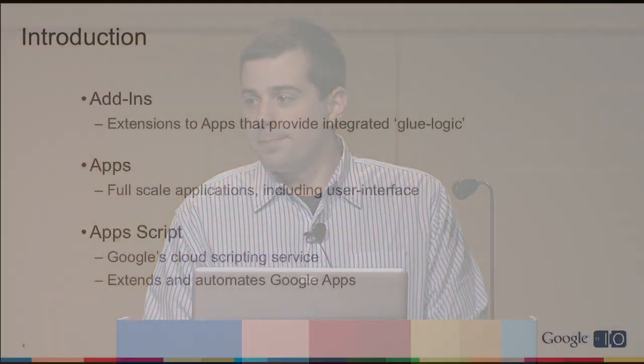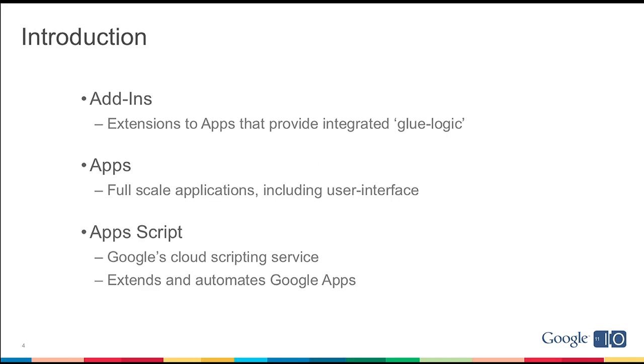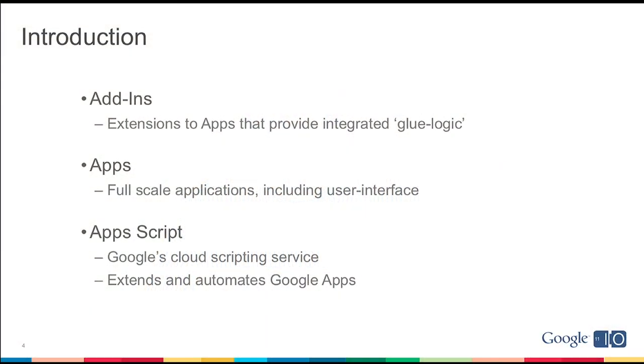So let's define some terms: an add-in, an app, and Apps Script. An add-in is an extension to Google Apps that provides integrated glue logic — think of it as a plug-in adding functionality to an existing Google App. An app, on the other hand, is a full-scale application with its own user interface and its own URL that interacts with the rest of the Google Apps Suite. Apps Script is Google's cloud scripting language, which lets you build both add-ins and apps that live entirely in the cloud and participate in the Google Apps Suite.